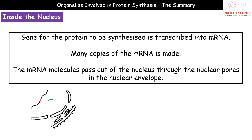What's going to happen is the gene for the protein that we want to synthesize is going to be transcribed into a strand of mRNA. mRNA just stands for messenger RNA. Once we've made that mRNA, we don't just make a single mRNA molecule. We actually make many copies of that mRNA, because we don't just want to make a single protein — we want to make many copies. If we've got lots of mRNA molecules, each of those can then make protein, so we can make it faster. It's a more efficient process.